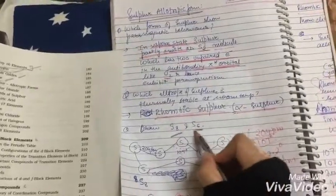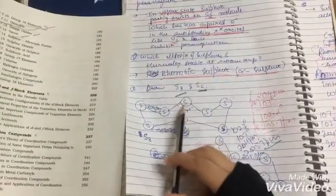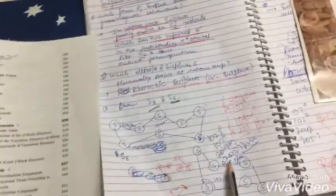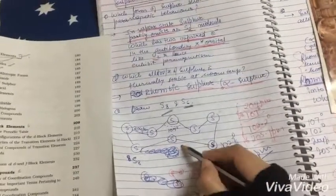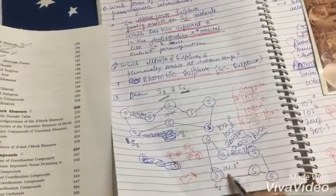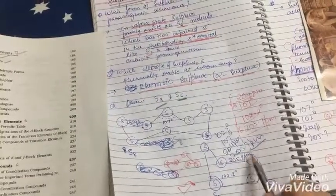This is very important. S8 or S6, both diagrams that is their structures, these can come in boards and with their bond angles. Here it is written 107 degree, 204 pm, and this is S8, and this is S6, here it is written 102.2 degree and this is 205.7 pm. These structures can come for drawing.